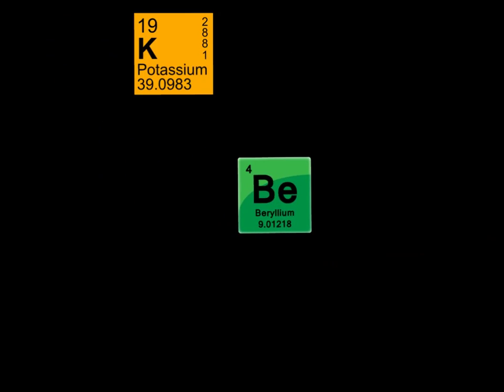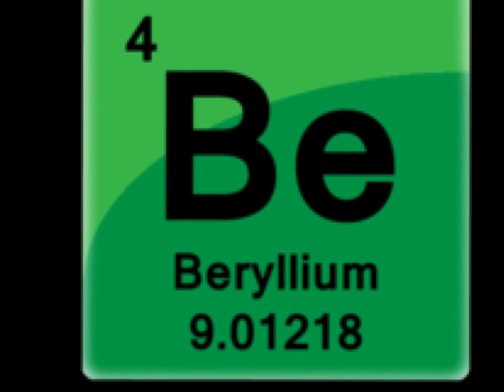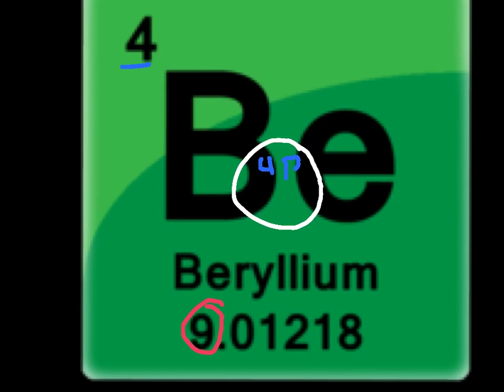We're starting off with beryllium. As you can see, beryllium has four protons. And because it has four protons, you're going to subtract four from nine, and you're going to end up with five neutrons. So let's start off by drawing the nucleus right there, and then we're going to have four protons and five neutrons in the center — in the nucleus.